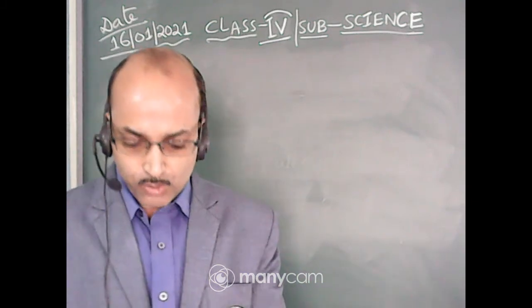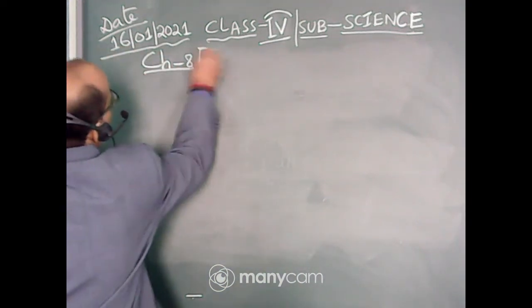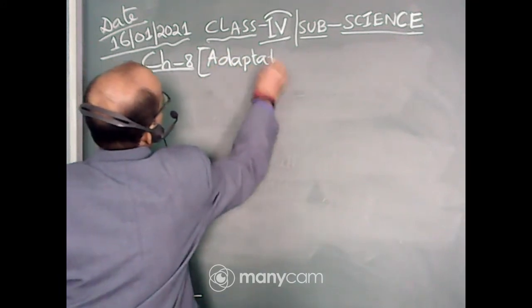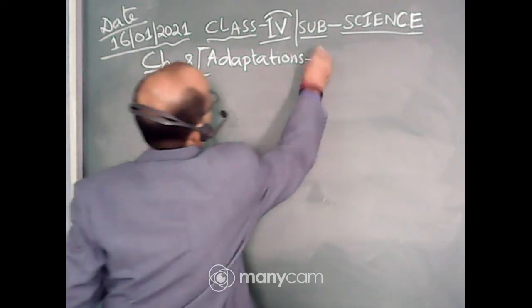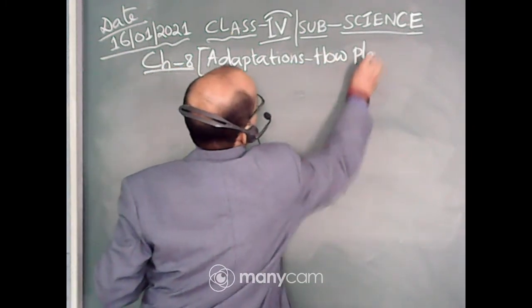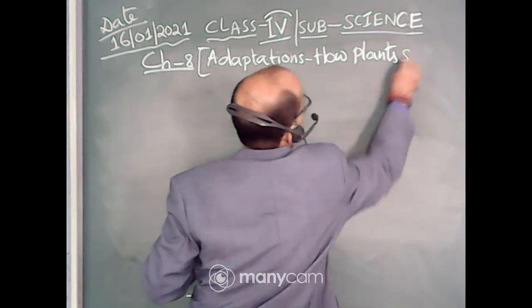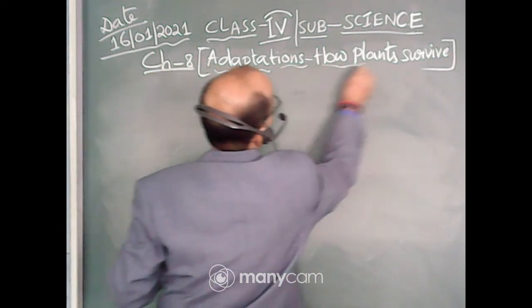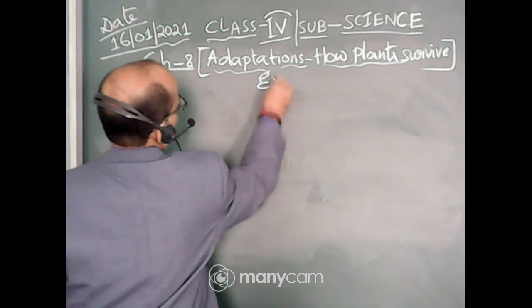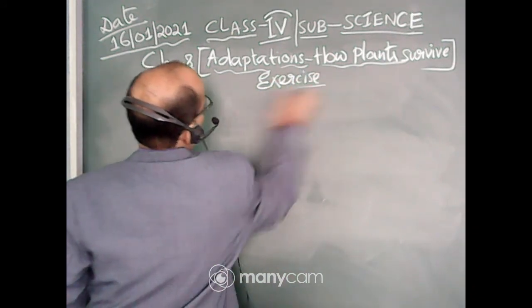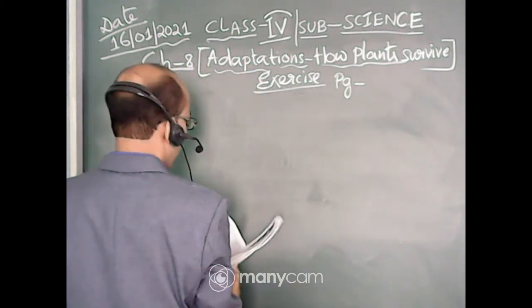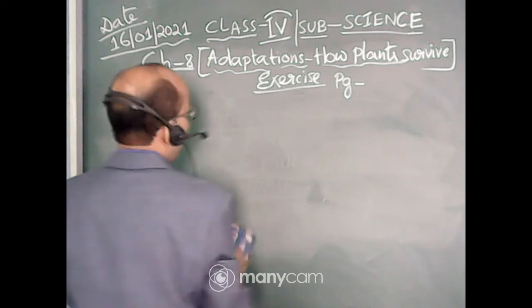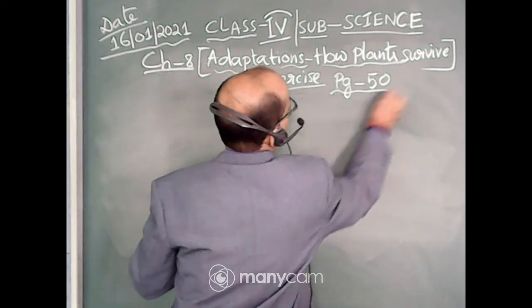We are doing Chapter Number 8. So let me write it here. This is Chapter Number 8 - Adaptations: How Plants Survive. We are solving the exercise. You can refer to page number 50 in your science book.